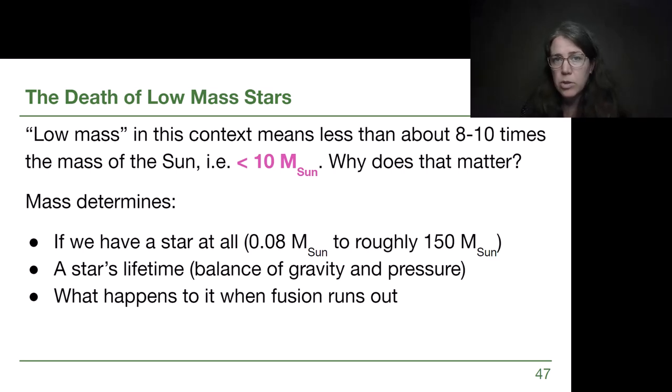Mass determines everything about stars. It tells us if we even have a star at all, because if we don't have enough mass, we'll have a planet or a brown dwarf, and if we have too much mass, we won't make a stable single star, we'll split and create a binary system or a multiple star system. So stars range from about 0.08 solar masses, below that is brown dwarfs and lower than that is gas planets, and they go up to about 150 solar masses, although scientists aren't quite sure about that upper limit.